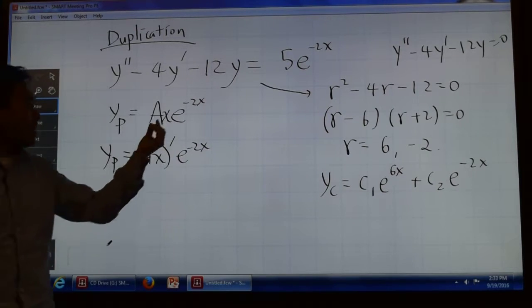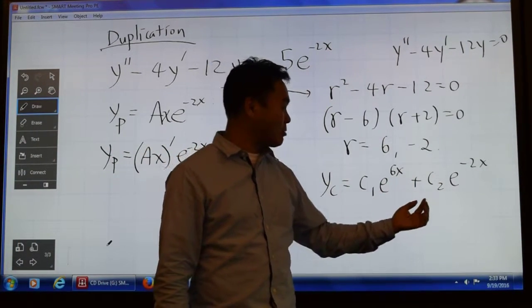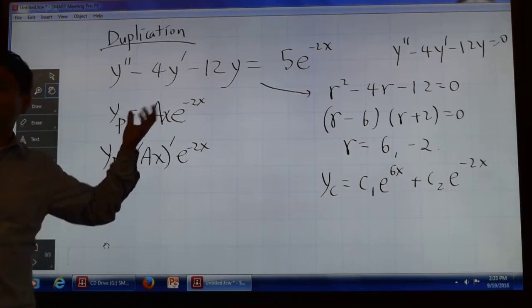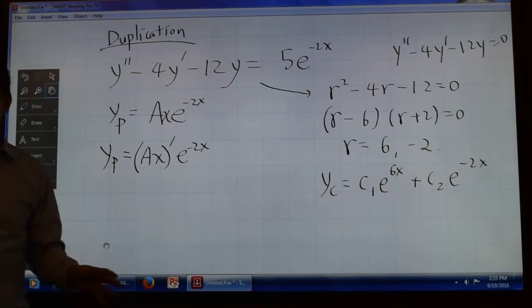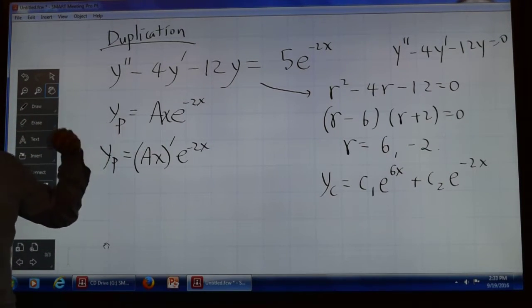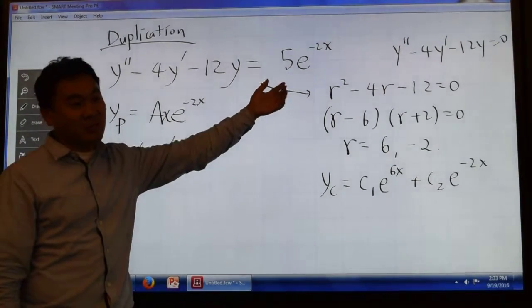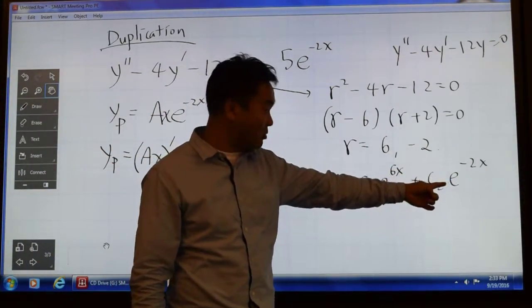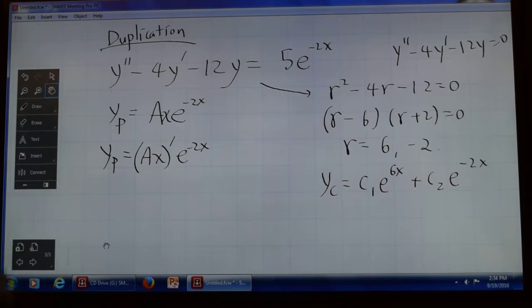And you know what? Sometimes even multiplying by X would not do it. Because sometimes you can think of another differentiation where you have not only this one, X times e to the negative two X, right? In that case, you would need to make it extra stronger. Make it X squared times e to the negative two X. So you just have to make it like one power more than what's in the YC? Yeah. So you keep multiplying by X until you escape the duplication. That's basically the idea.